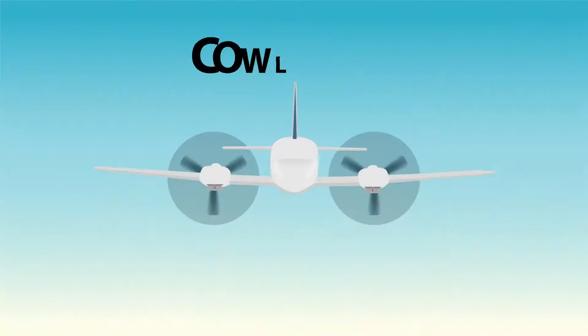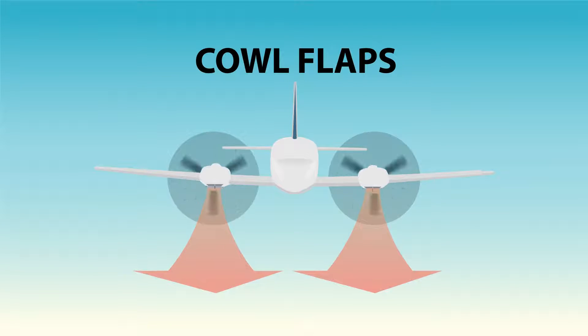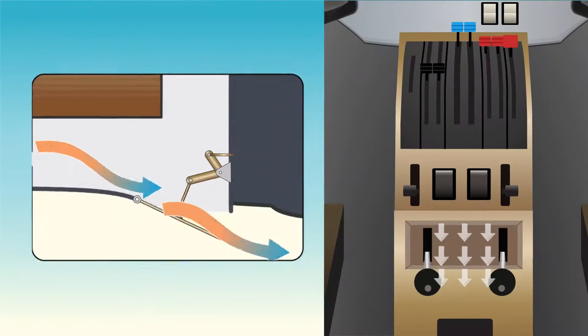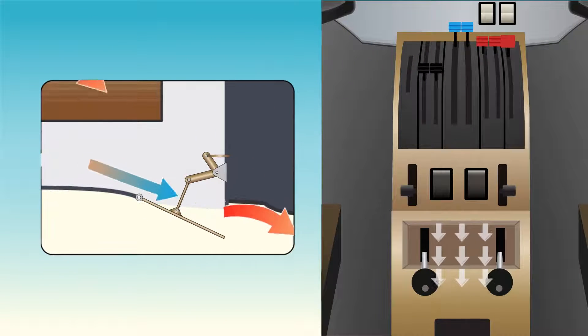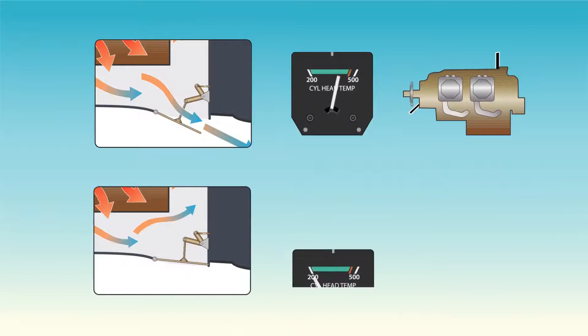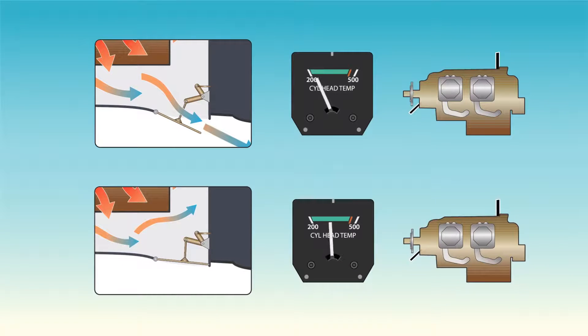Let us review. Multi-engine aircraft with air-cooled engines can regulate engine temperature using cowl flaps. Cowl flaps are opened and closed by a lever in the cockpit. Open cowl flaps allow more airflow through the engine compartment, allowing the engine to cool down.